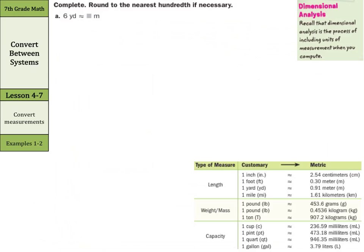Complete, round the answer to the nearest hundredth if necessary. And the method we're going to use here is called dimensional analysis. And it's the process of including units of measurement when you compute. So, 6 yards is equal to how many meters? The way we can set this up, it's really cool, is we can go 6 yards over 1. We're going to multiply this by something. We're going to multiply this by a yards to meters fact. And if we look at our table,